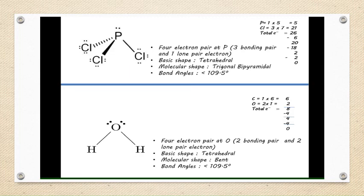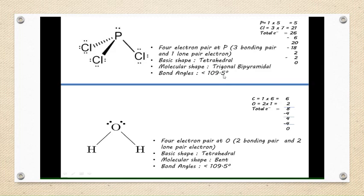For the next pair, PCl3 and H2O, we calculate the electrons and identify bonding pairs and lone pairs. PCl3 has 3 bonding pairs and 1 lone pair, giving a trigonal pyramidal shape with a bond angle below 109.5 degrees. H2O has 2 bonding pairs and 2 lone pairs, giving a bent shape with a bond angle also below 109.5 degrees. Both have tetrahedral electron geometry.